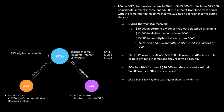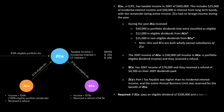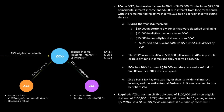ZEDCO's Part 1 taxes payable was higher than its incidental interest income, and the entire annual business limit was reserved for the benefit of ZEDCO. That's going to help us figure out ZEDCO's Part 1 refundable taxes. Finally, the required: if ZEDCO pays an eligible dividend of $100,000 and a non-eligible dividend of $100,000, what will the refund be?